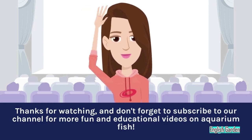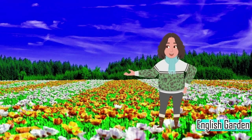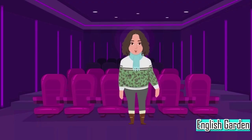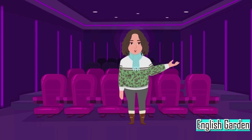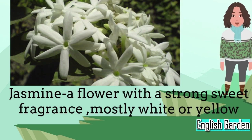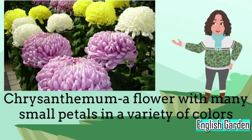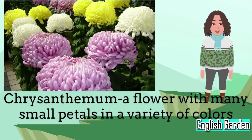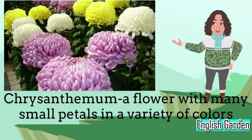Flowers are beautiful, and there are many different types. Here are the names of some famous flowers in English. Jasmine: a flower with a strong sweet fragrance, mostly white or yellow. Chrysanthemum: a flower with many small petals in a variety of colors.